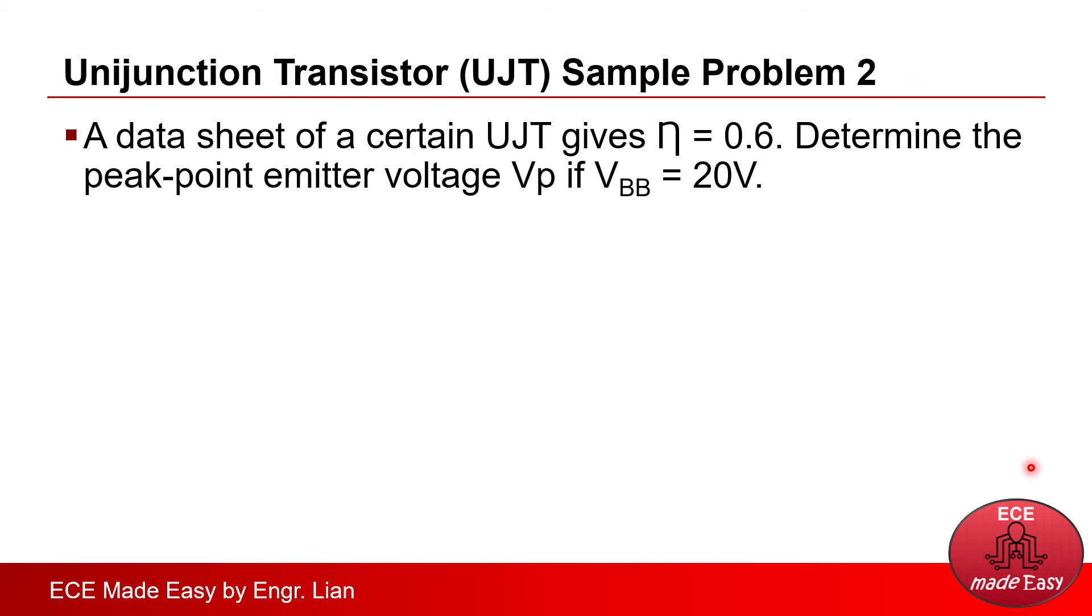And to solve, we are just going to use that formula and substitute the given. Take note that the Vpn here is the voltage across the equivalent diode or a silicon diode with a voltage drop of 0.7 volts. And we will be able to solve Vp equal to 12.7 volts. And that is the final answer.